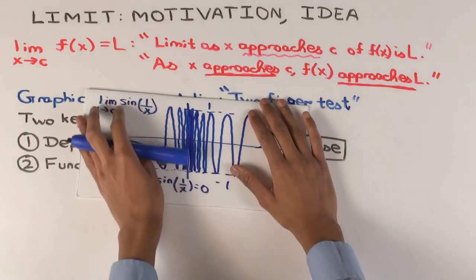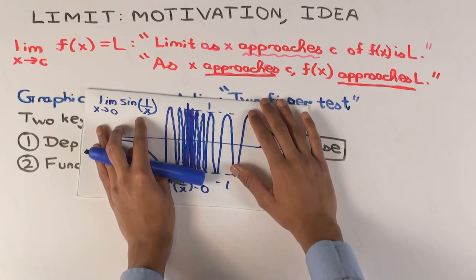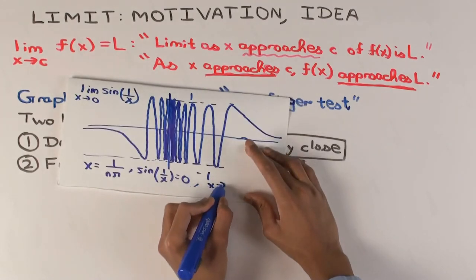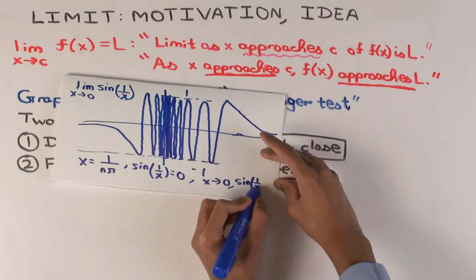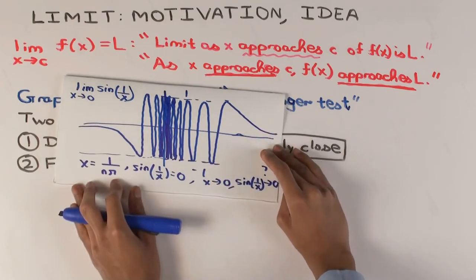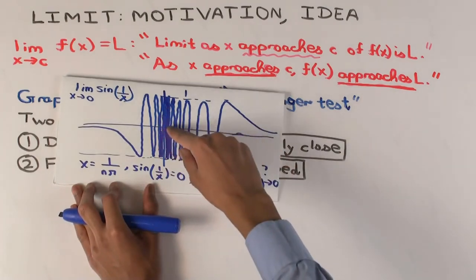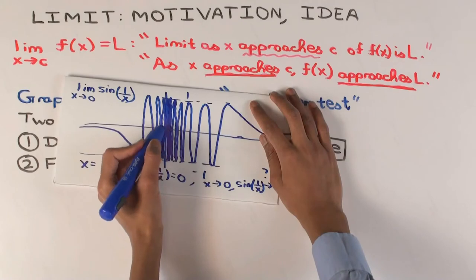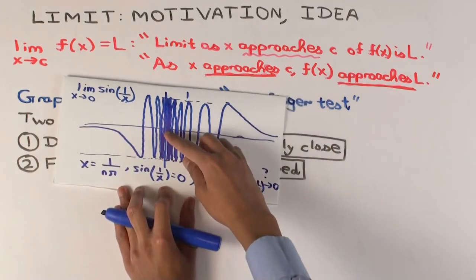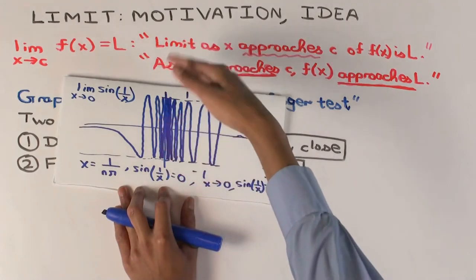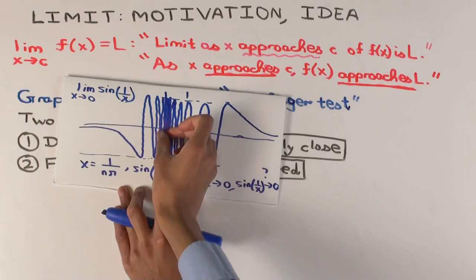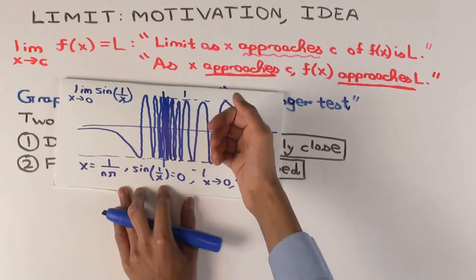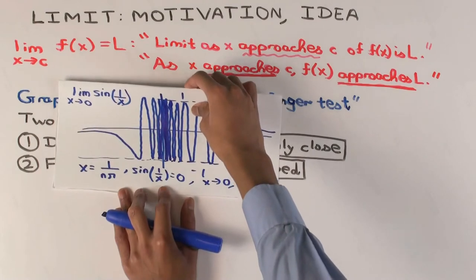As x approaches zero, this sequence keeps coming close to zero. It's definitely coming near zero — any small disk you make around zero, the graph is going to enter that. On the other hand, it's not really staying close to zero: however small an interval you take around zero on the x-axis, the function is oscillating between minus one and one. So it's not staying faithful to zero.